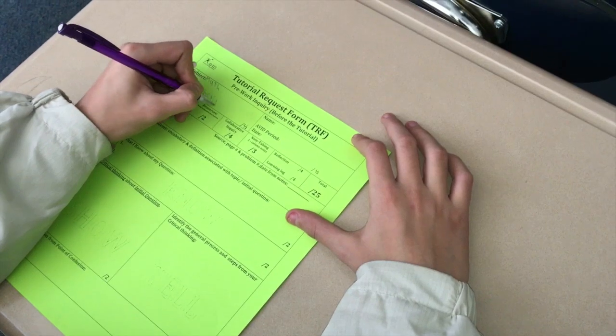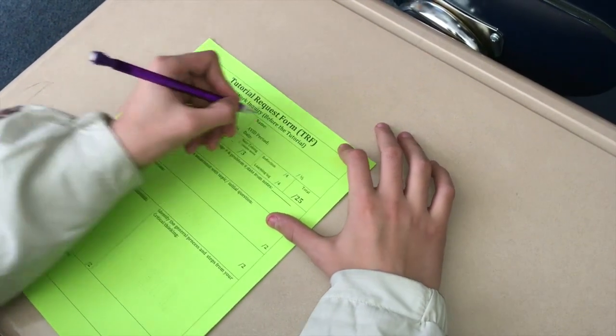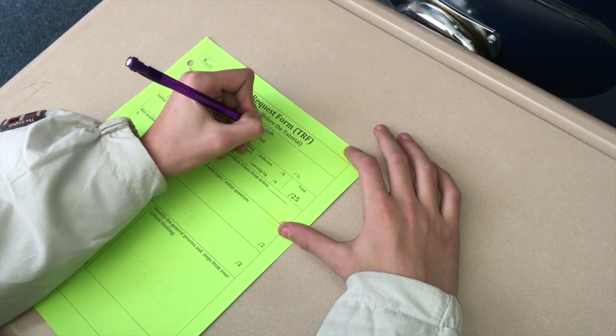The first step in filling out an AVID TRF is to fill out the subject, topic, name, AVID period, and date.